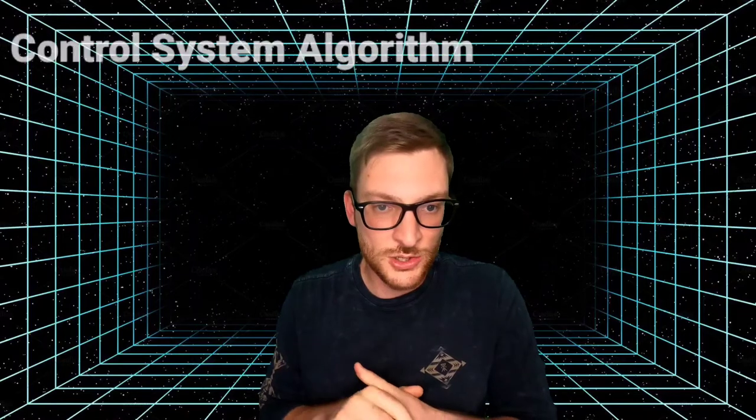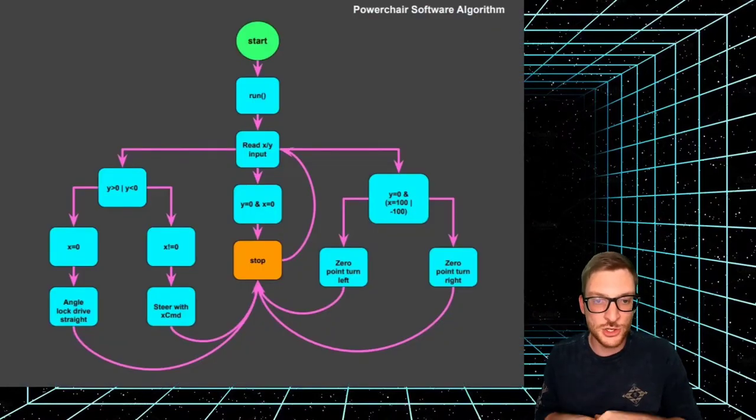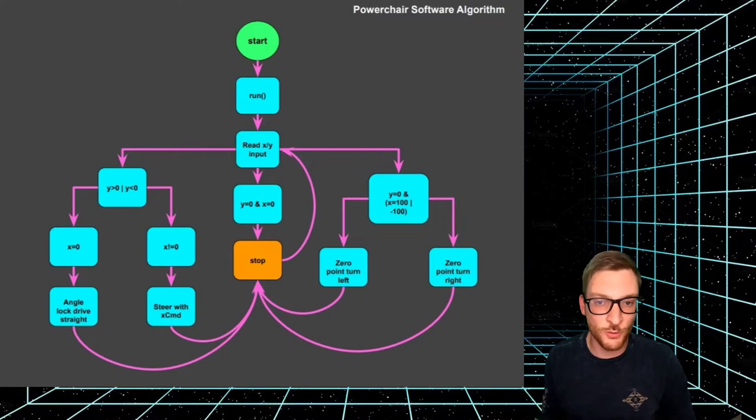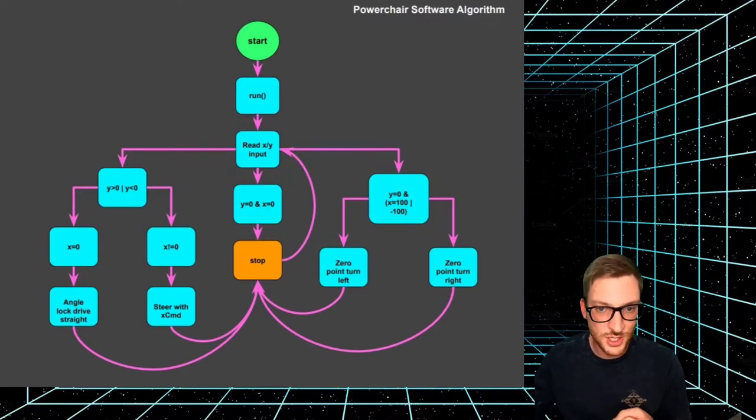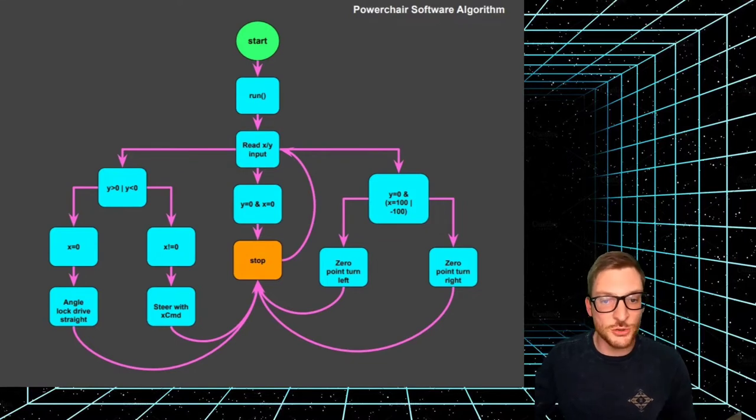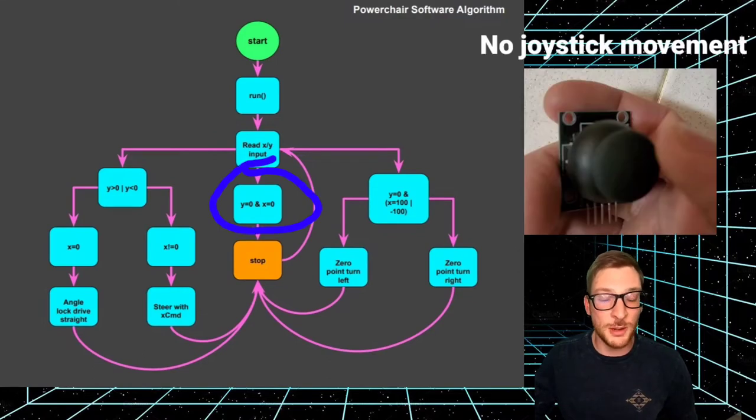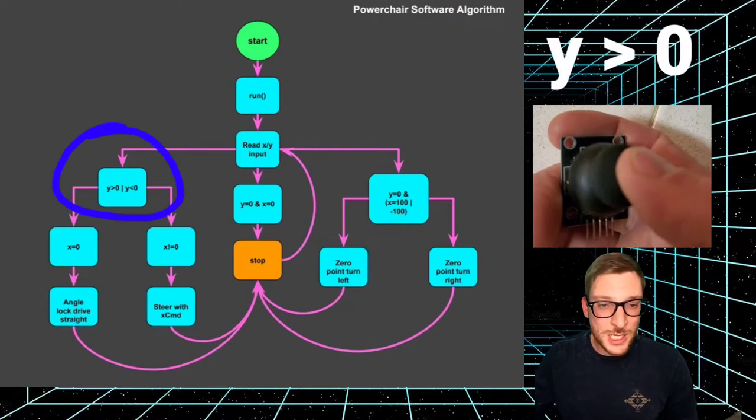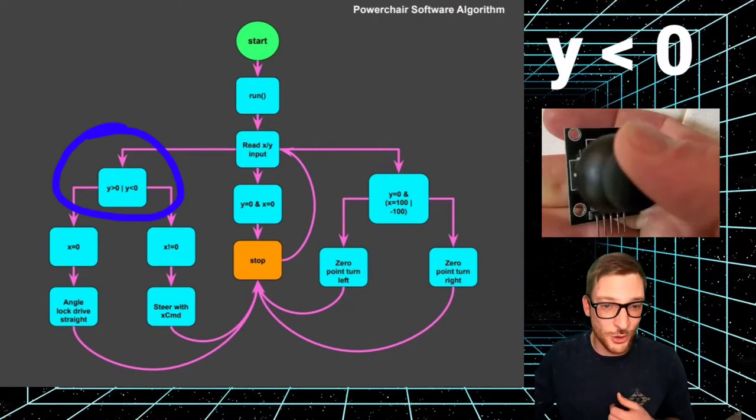All right, let's get into the control system algorithm and some of the code. Here's a basic control algorithm diagram that I made to show the operation and logic that's used by the current software. And again, as I've said, this is likely going to change as I make it better over time. The program goes through initialization and starts the run function. It then begins reading and processing the X and Y joystick inputs. The next step is where the decisions are made. As you can see, there's three possibilities here after reading the X and Y input. If both X and Y equals zero, then it means you're not moving the joystick and the power wheelchair should remain stopped and continue reading the X and Y inputs of the joystick. If the Y input is greater than zero or is less than zero, then you're commanding the power wheelchair forward or backward and it takes the next step in the logic tree.